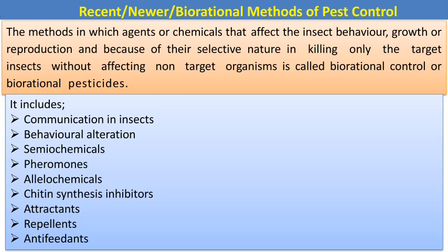In biorational methods, some of the new techniques include: communication in insects, behavioral alteration, semiochemicals, pheromones, allelochemicals, chitin synthesis inhibitors, attractants, repellents, and antifeedants. These are the different chemicals we can use to alter the behavioral response of insects.